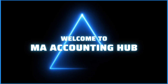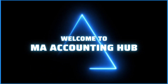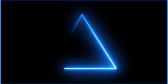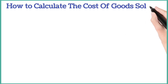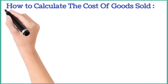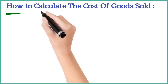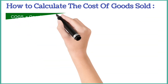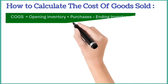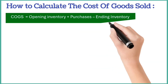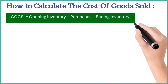Hi viewers, you are watching Millennium Academy Accounting Hub. To calculate the cost of goods sold, we typically use the following formula: the cost of goods sold is equal to beginning inventory plus purchases, minus ending inventory.